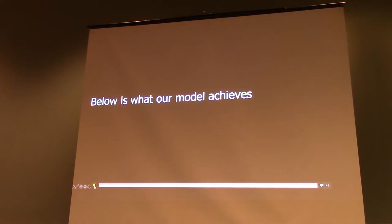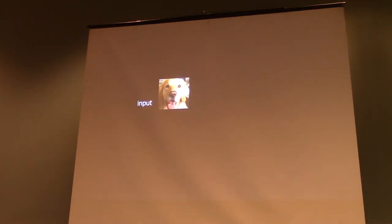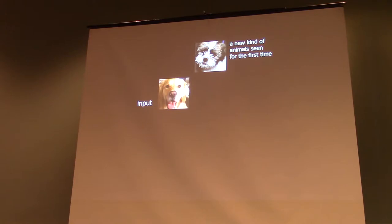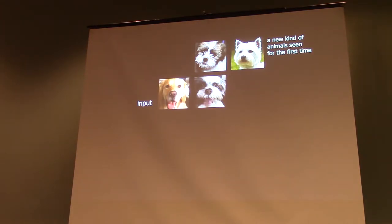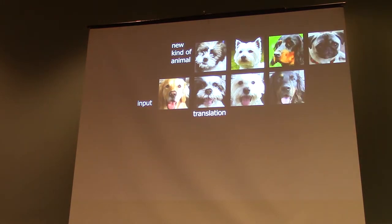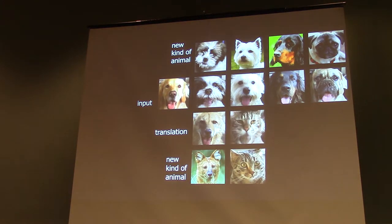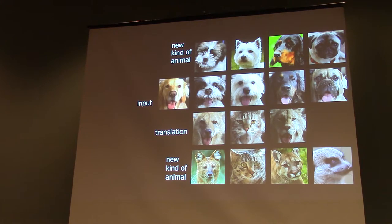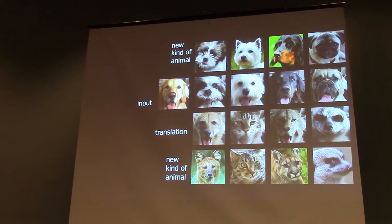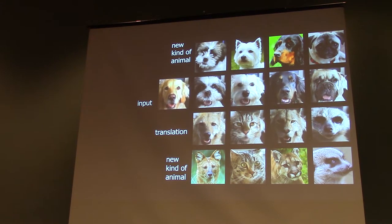This is what our model achieves: given an input image — say a golden retriever — and a few images of a new breed of dog the model hasn't seen during training, the model is able to extract characteristics from the example images and translate the input golden retriever to that new breed.